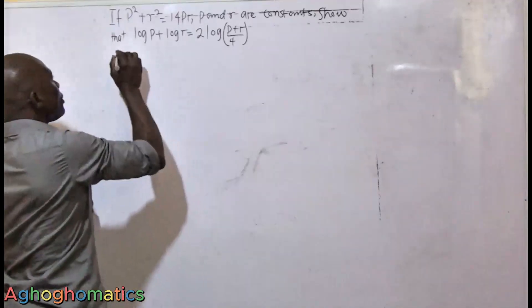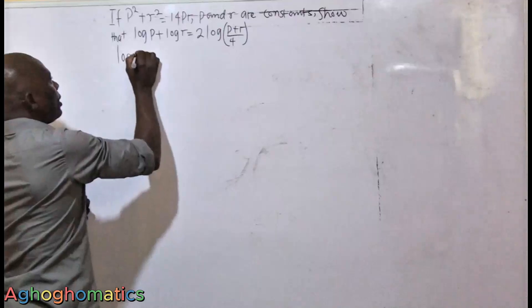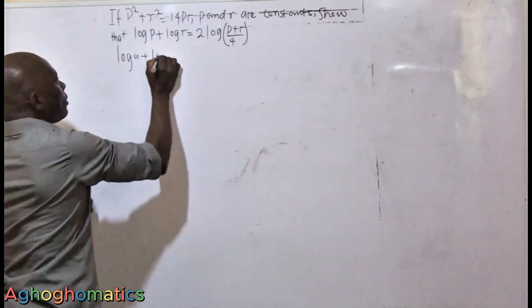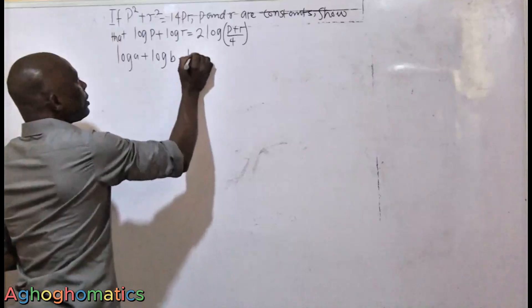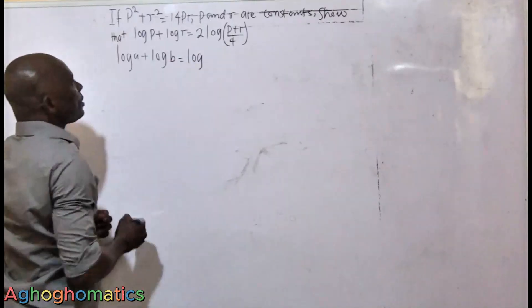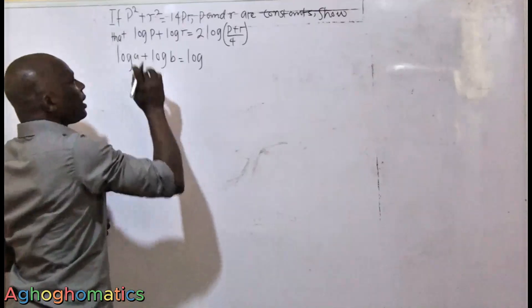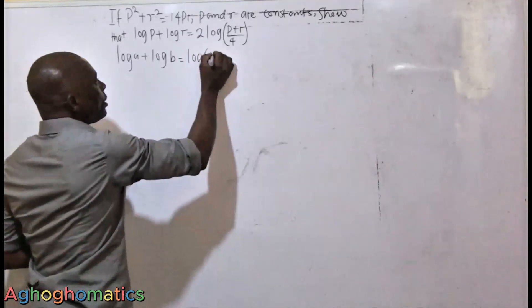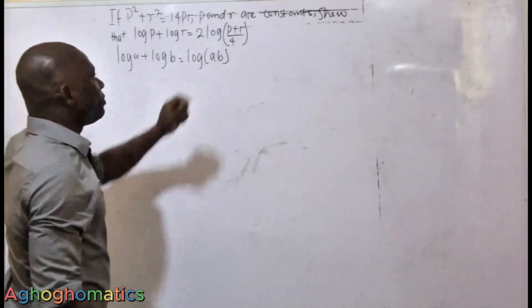We'll have log A plus log B. We know that this is from logarithms. Since the bases are the same and the operation sign here is addition, all we need to do is log A times B, which is log AB.